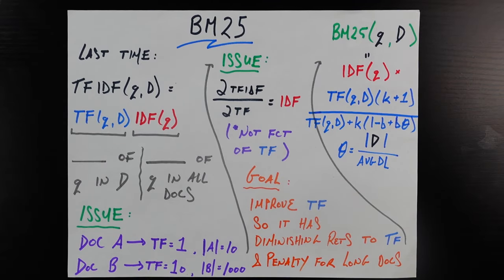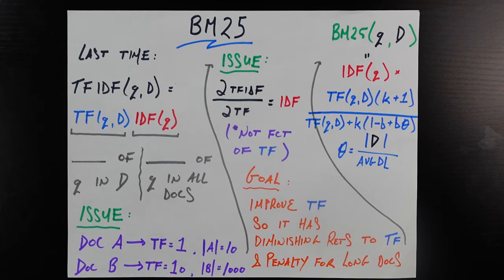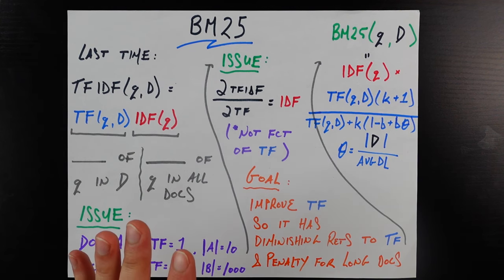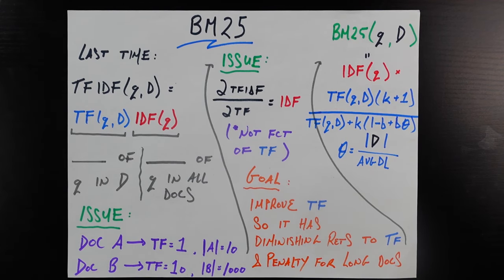What is up, everybody? Got a really cool video for you today on a topic called BM25. It looks like a really weird string of characters and numbers, but it turns out it is one of, if not the most important feature used in modern search engines to make sure that the documents or items you get back whenever you execute some kind of query or search are textually relevant to your query.